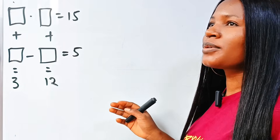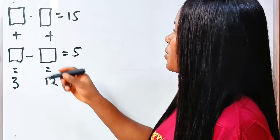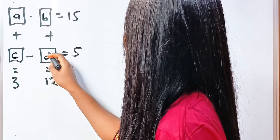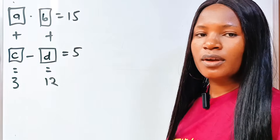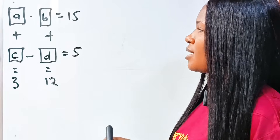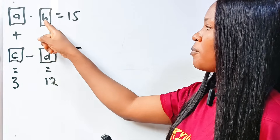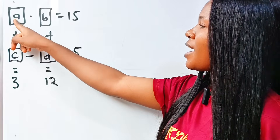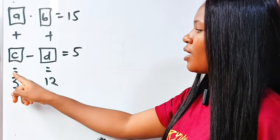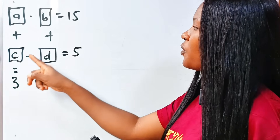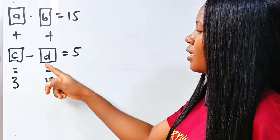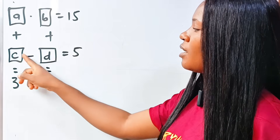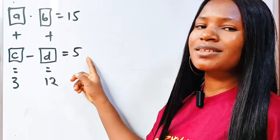The question gives us four values: let's call them A, B, C, and D. If you multiply A by B, you get 15. If you add A to C, your answer is 3. If you add B to D, your answer is 12. And if you subtract D from C, your answer is 5.